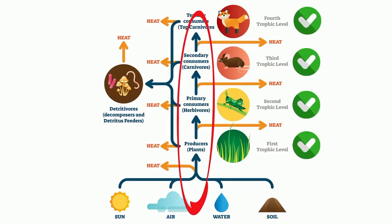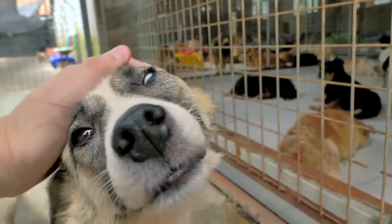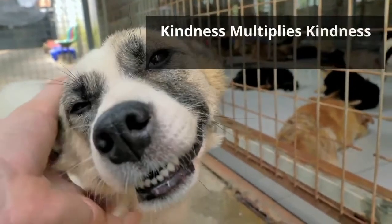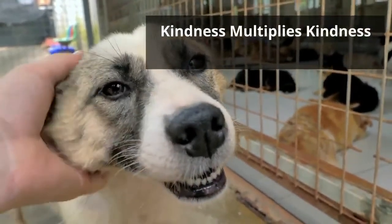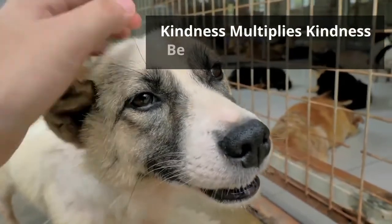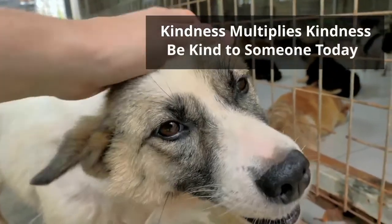Notice that the arrows always point in the direction of where the energy is being transferred. The energy of the plants is transferred to the primary consumers. Thanks for watching and remember, kindness multiplies kindness. Be kind to someone today.